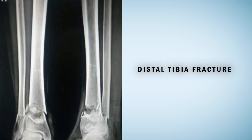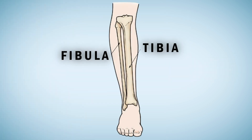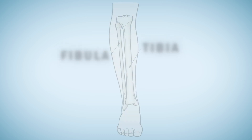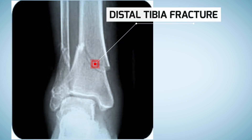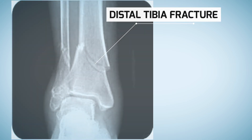First, let us understand the distal tibia fracture. As you can see in this diagram, in the lower leg there are two long bones. The larger of the two bones is known as the tibia, or the shin bone. Distal tibia fracture happens in the lower part of the tibia.